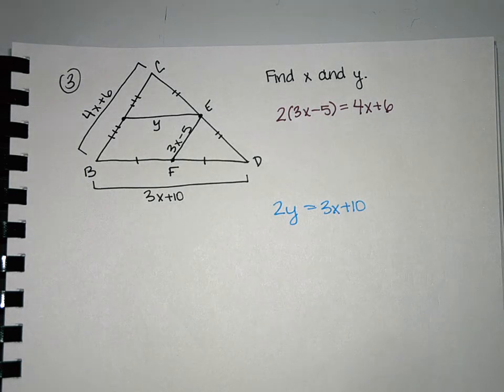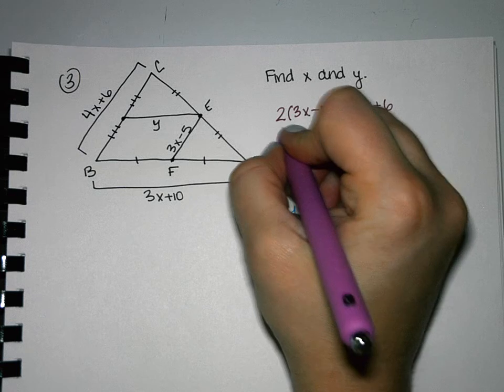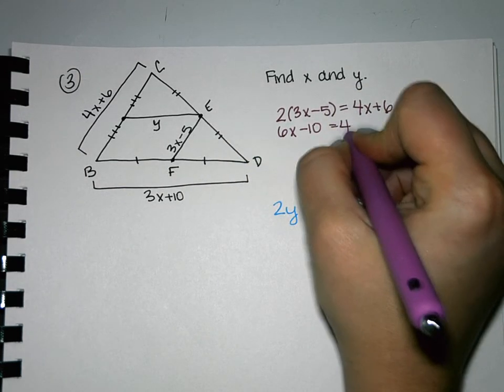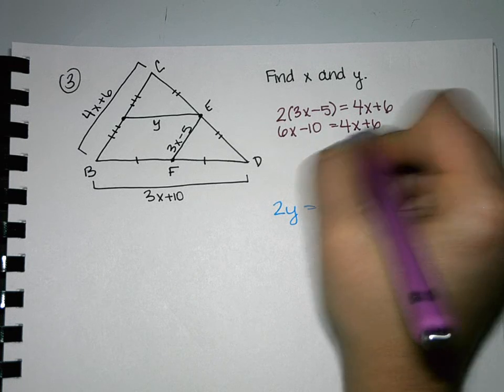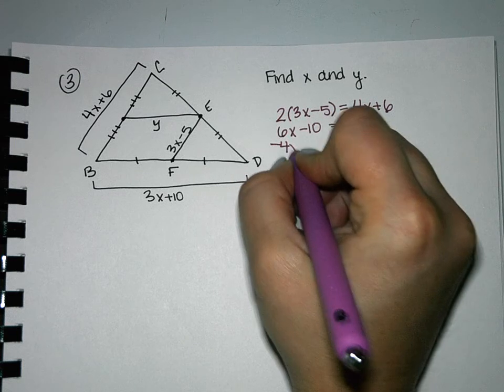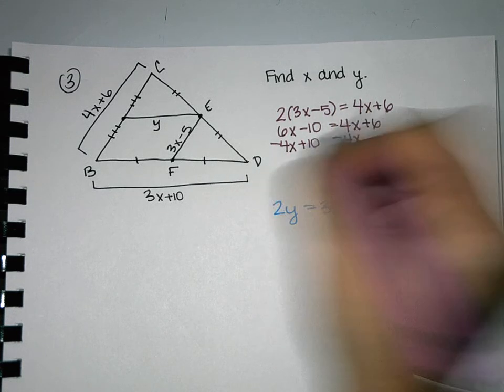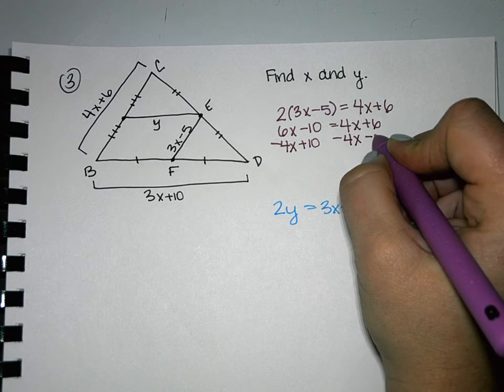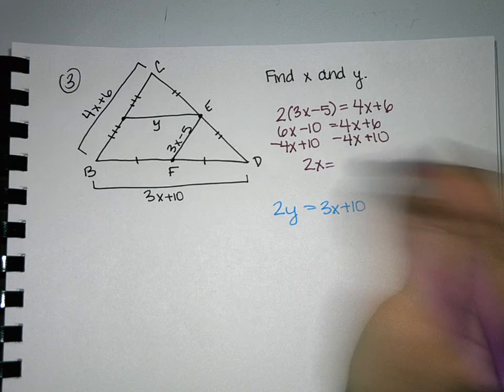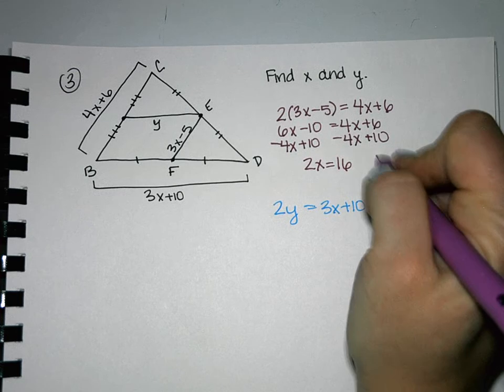So which of those equations looks like one we can actually solve right away? The first one, because it has all the same letter. So if I distribute the 2, and move the 4x as well as the negative 10, we get 2x equals 16, so we would get that x is equal to 8.